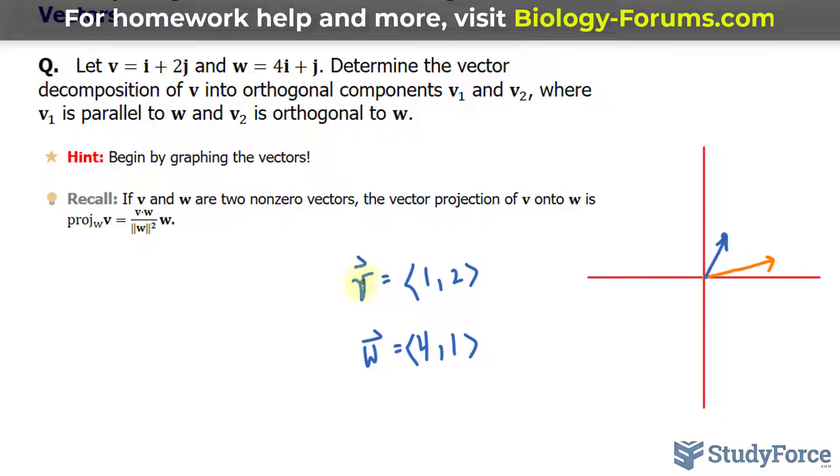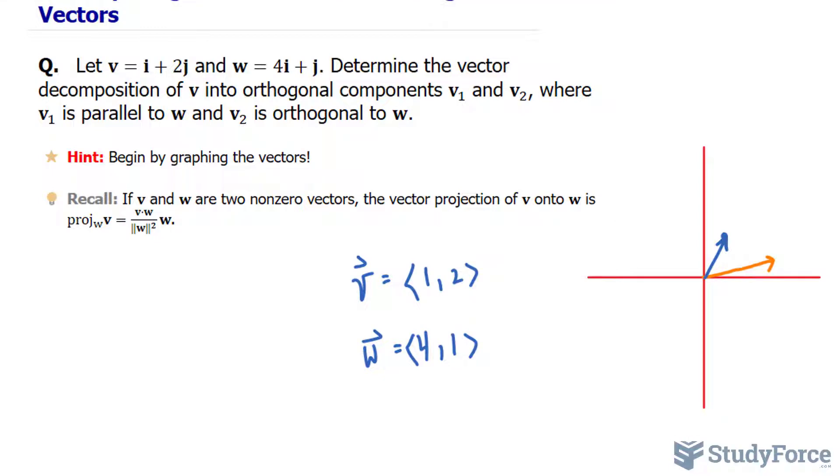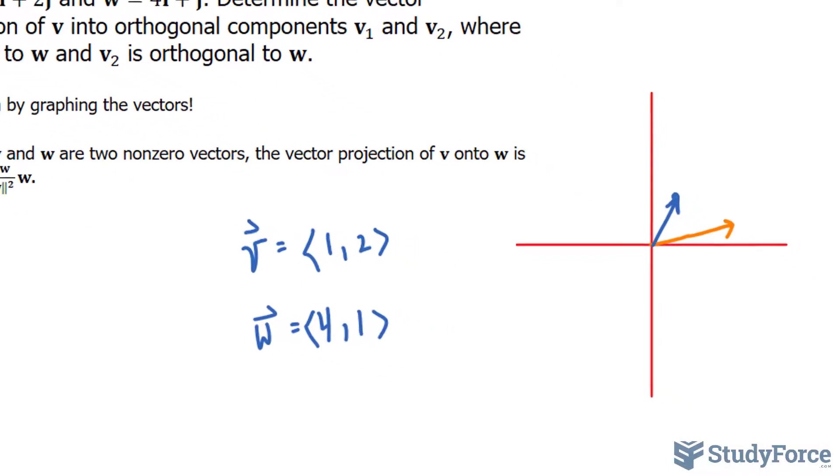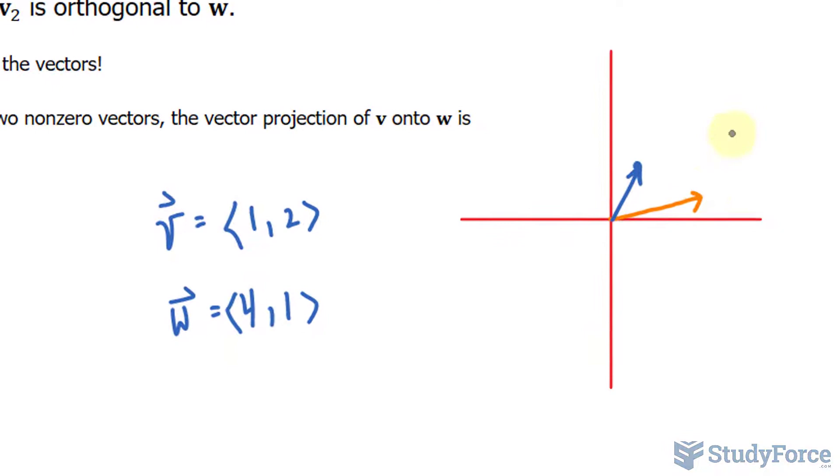Now, they want us to decompose V so that it's broken down into two orthogonal components, where V₁ is parallel to W—so this is vector W, and V₁ is parallel, so going like this—and V₂ is orthogonal, meaning at 90 degrees. So another one going like that, and this one up here is V₂.